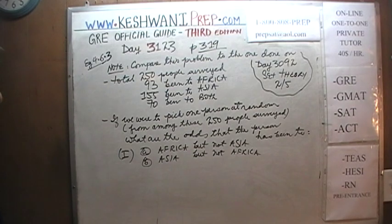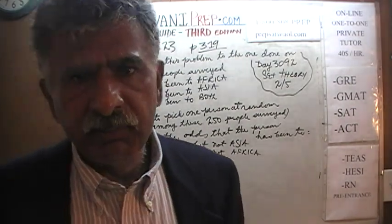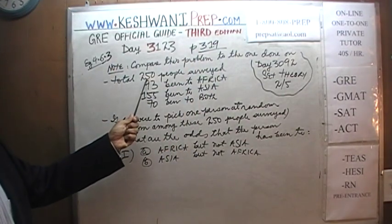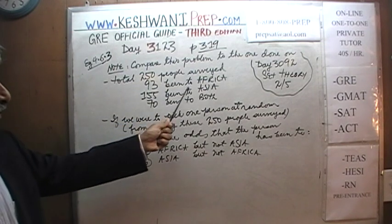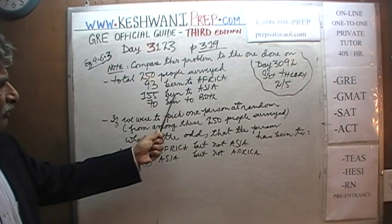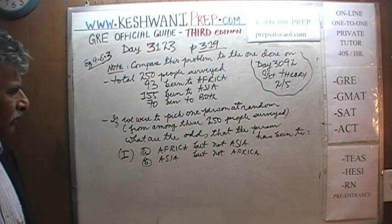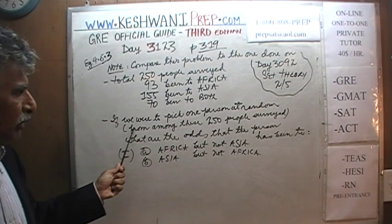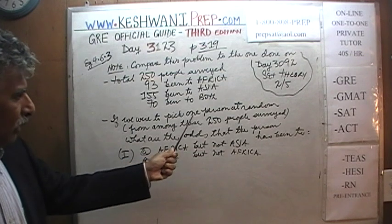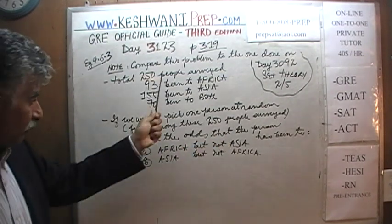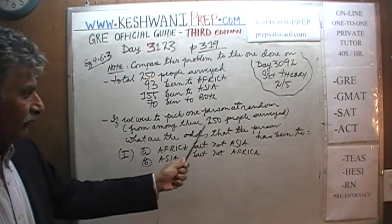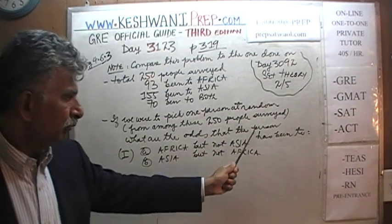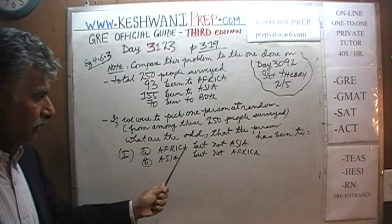Let's take a look at it. It says that we surveyed 250 people, and these were the findings: 93 people out of those 250 told us that they have been to Africa. 155 people told us they have been to Asia. And 70 people told us that they have been to both. Now here's the question: if we were to pick one person at random from among these 250 people, what are the odds that the person has been to Africa but not Asia?